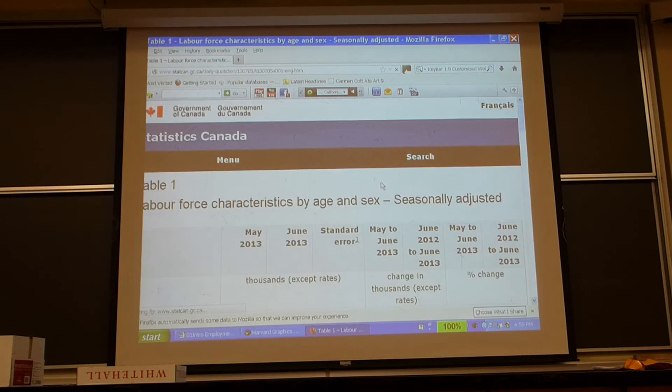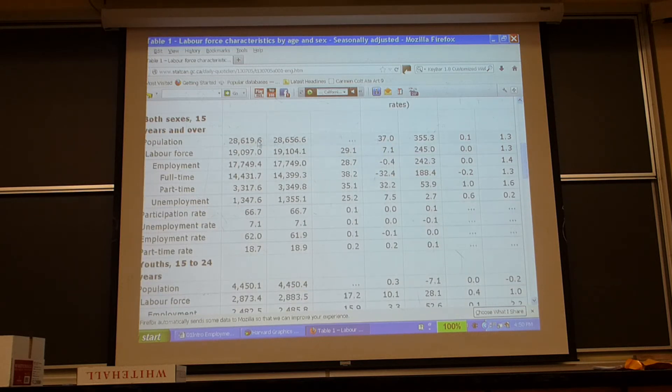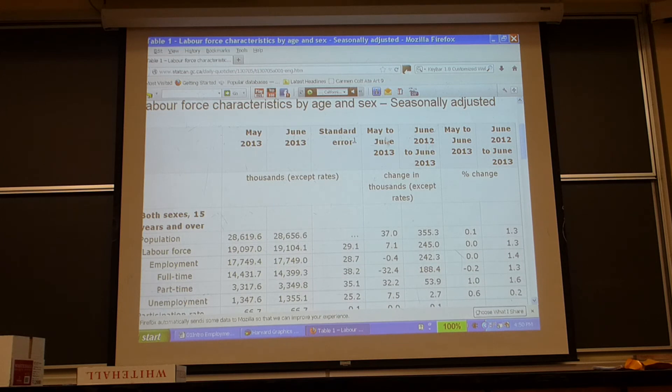Now notice. This is the population in Canada. The adult population, 28 million. It went up from May to June 2013. In the last month the adult population of Canada went up 37,000. Where did they come from? It might have been immigrants, people becoming 15, people entering the labor force, maybe women entering the labor force. Here's the labor force. The population went up like this, but the labor force only went up by 7, not a whole lot.